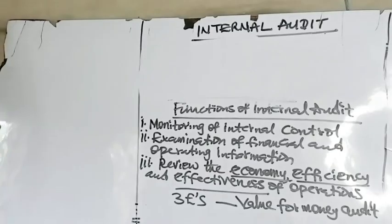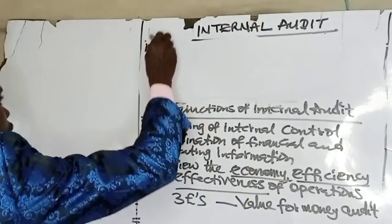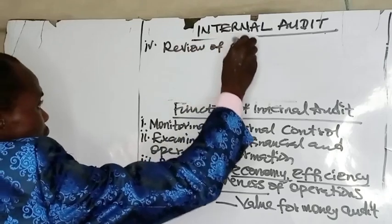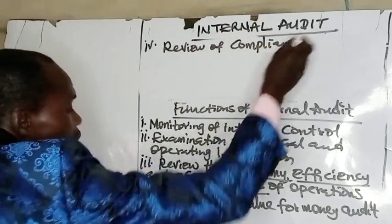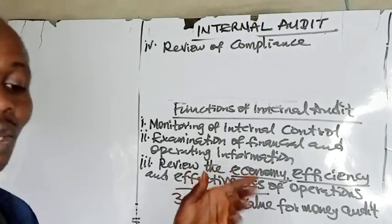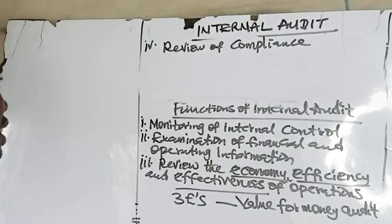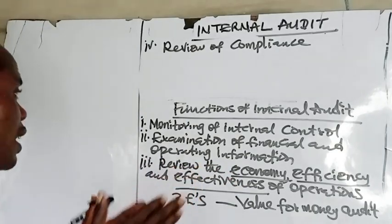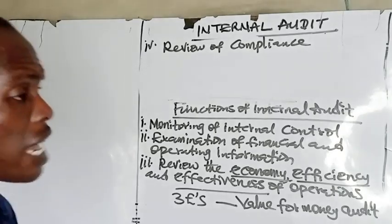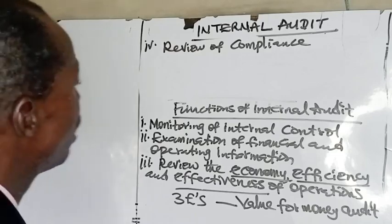Number four function is review of compliance. Internal auditors may be asked to check compliance with laws and regulations, including the extent to which financial statements comply with laws and regulations such as IFRS, IAS, and other laws. These are the functions of internal audit.